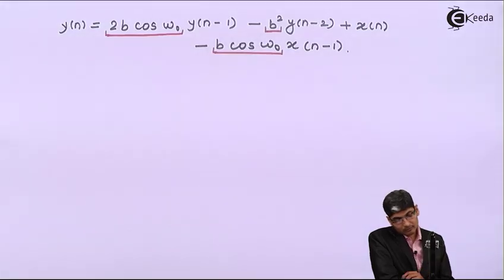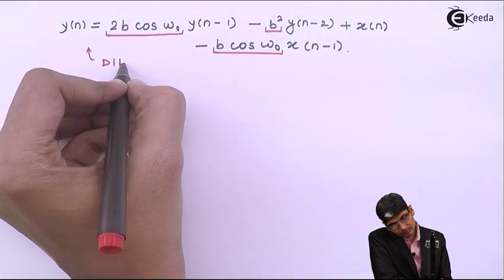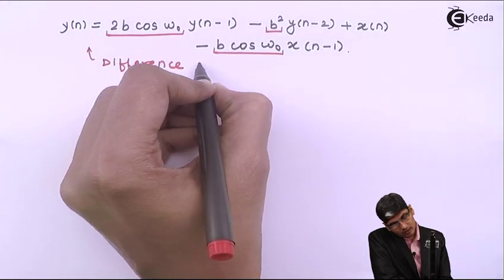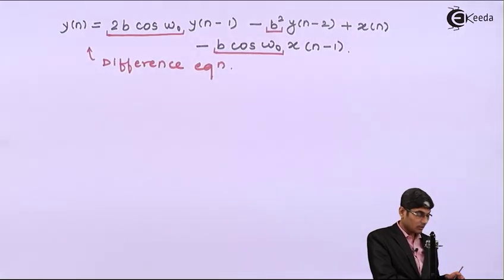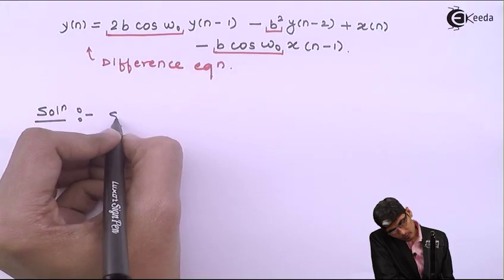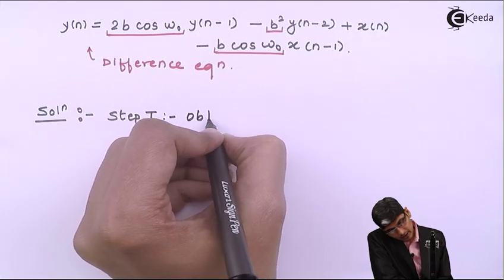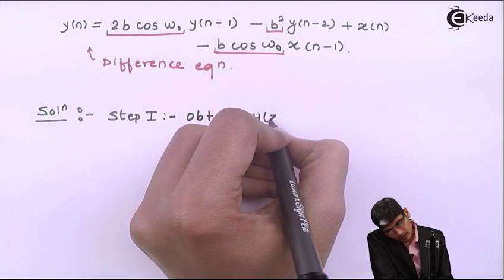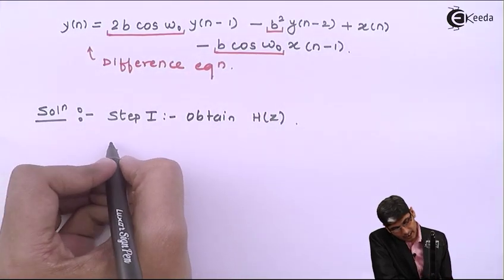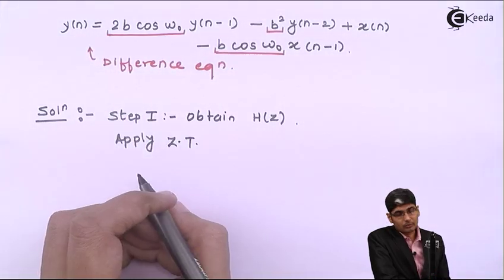Let us go ahead and solve the problem. The problem is given in the form of a difference equation. Since it is given as a difference equation, I need to first obtain H(z). Step 1 will be to obtain H(z). To obtain H(z), I need to apply the Z-transform on the given problem.